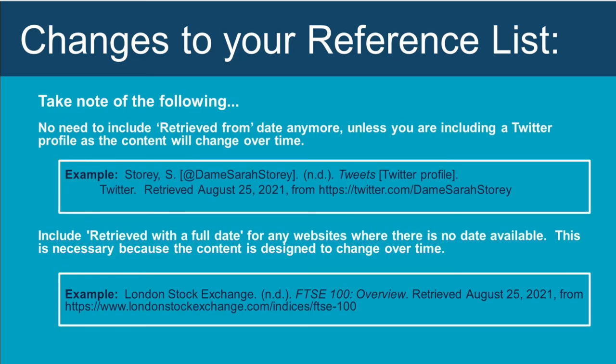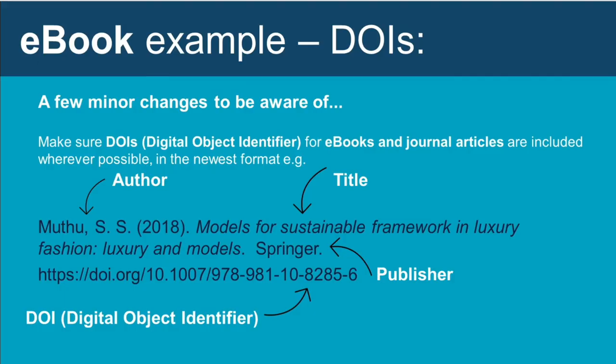You don't need to include a 'retrieved from' date for many online sources such as ebooks, online journal articles, and documents from websites. However, some web pages contain rapidly changing information — such as stock market, statistical, or demographic data. When a website's contents change frequently and is not archived, include a retrieval date in the reference. An example is the London Stock Exchange website. Another source requiring a retrieval date is a Twitter profile.